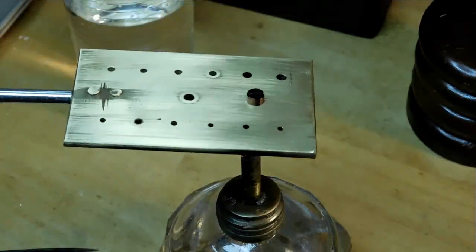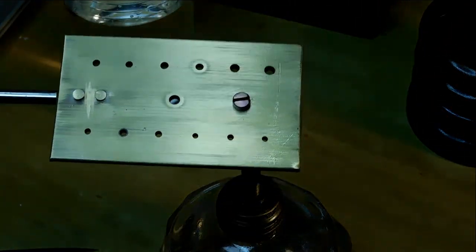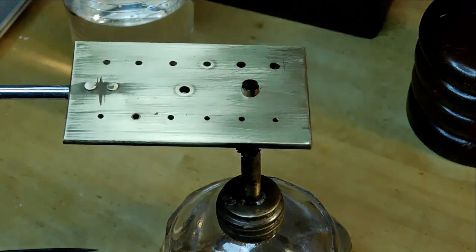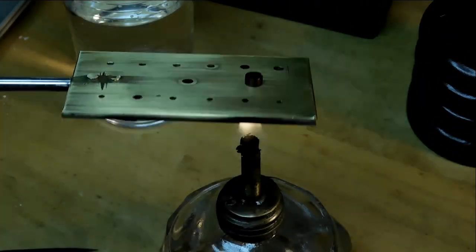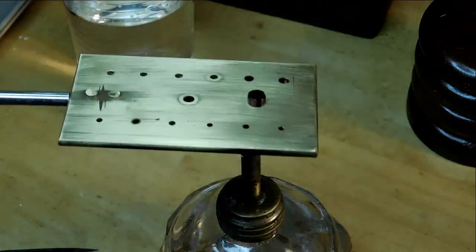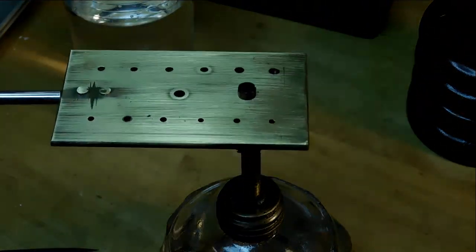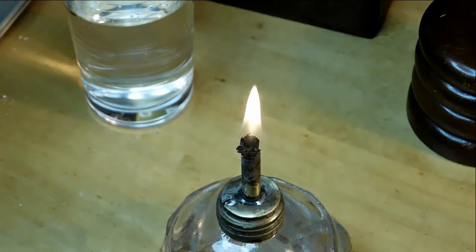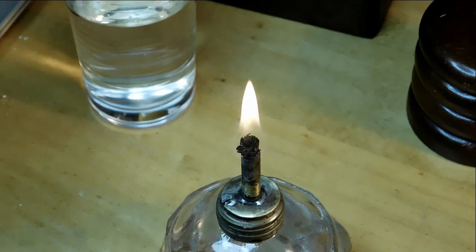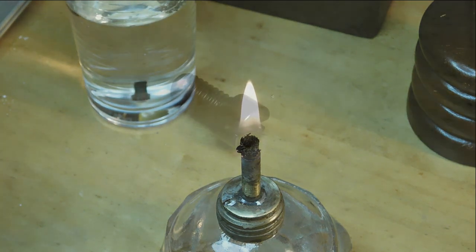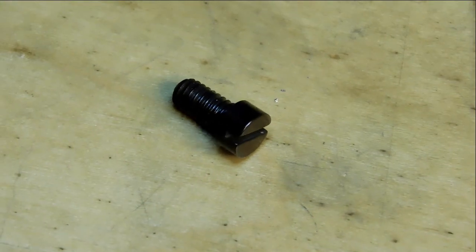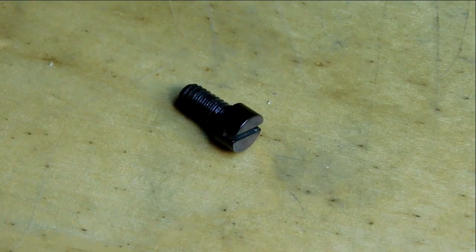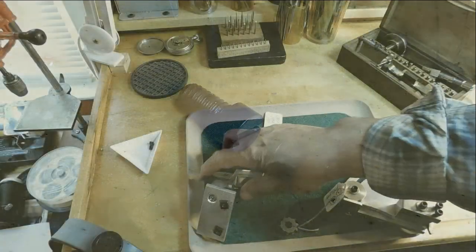There you can see it now, it's starting to turn a little blue on me now. Now you got to watch it really close to get the color that you want, and I'm getting pretty close to that now. You see that glass of water off to the back there—that's where that screw is going to go when it gets to that color to stop the tempering. There we go, it's going in there now. Alright, there's the finished product.